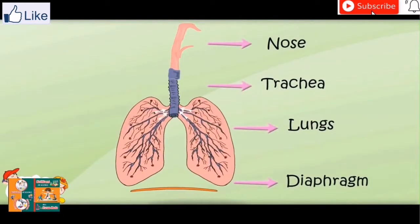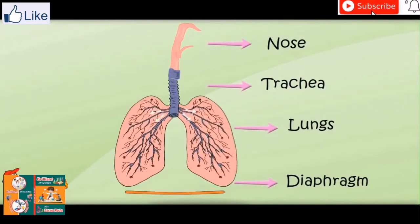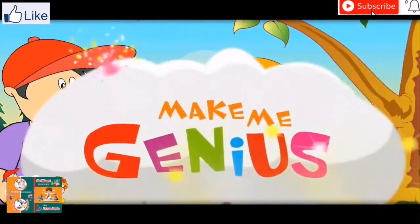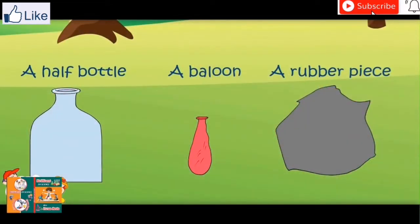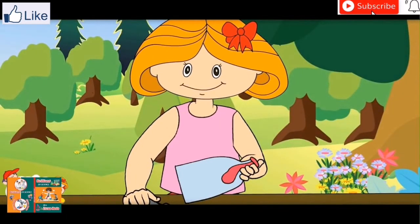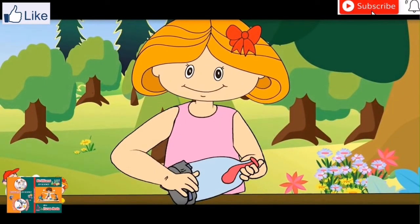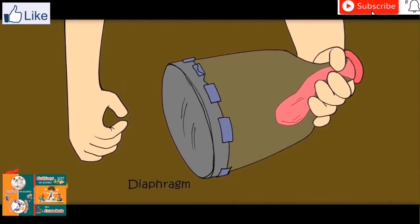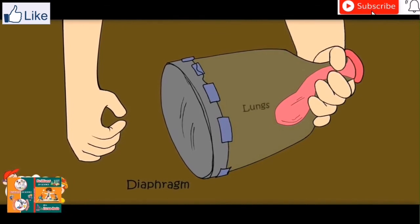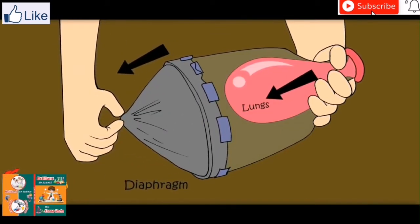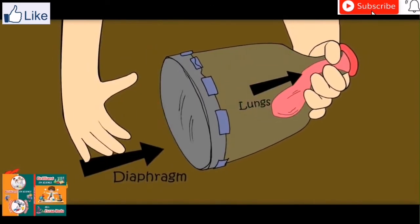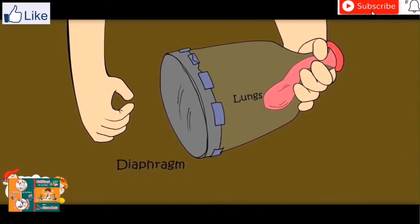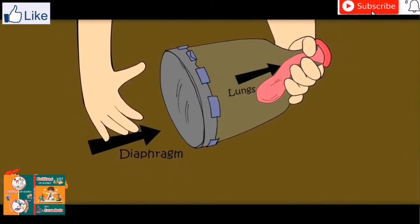Now I understand the whole process. Let me show you an experiment — how do the diaphragm and lungs work? This rubber is like a diaphragm and the balloon is like the lungs. When the diaphragm goes down, air goes into the lungs. And when the diaphragm goes up, air goes out of the lungs. Now I know how we breathe.